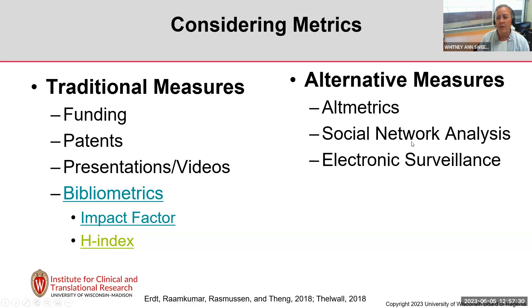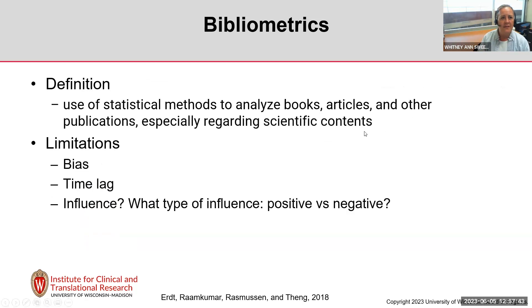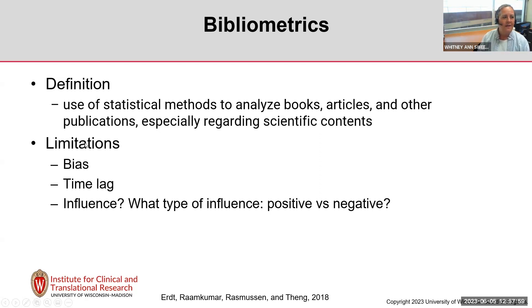We'll also touch on social network analysis and electronic surveillance. Regarding basic bibliometrics — the use of statistical methods to analyze books, articles, and other publications, especially regarding scientific content — some limitations include potential bias, time lags (though improved since my first paper in 1997), and the fact that measures often don't tell you whether a publication had a positive or negative influence, just that it exists.